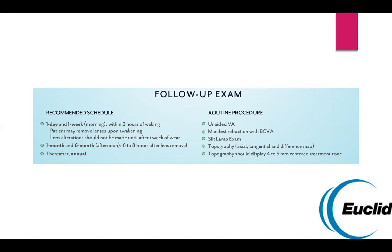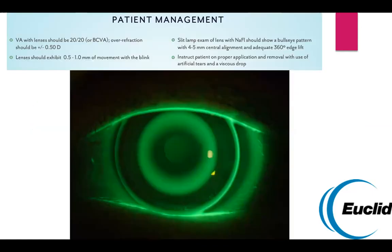After the six month appointment, you can see patients annually. At follow-ups, check vision without lenses to make sure treatment is working, do manifest refraction without lenses, slit lamp exam, and topography — which is very important. I like the difference map because you can look at the change between appointments and see that the treatment zone is present. The topography should display about four to five millimeters of a centered treatment zone.